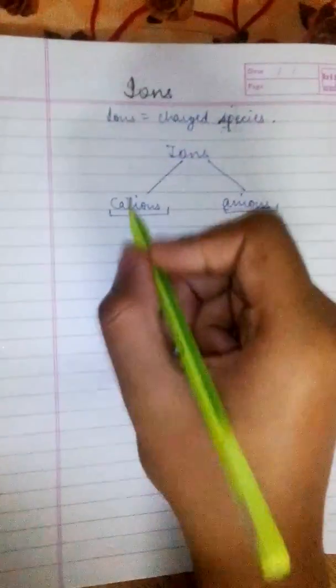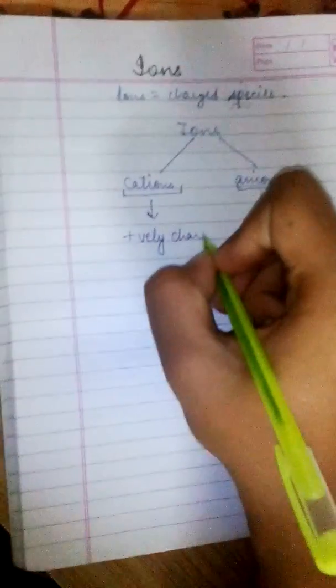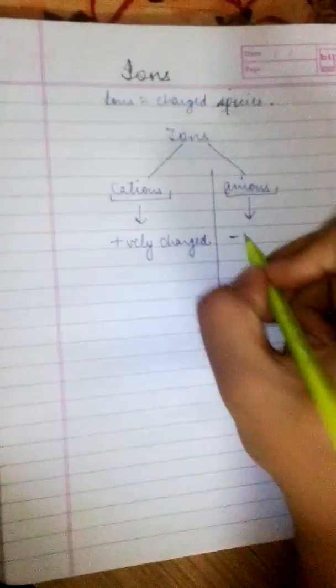First let us talk about cation. Cations, they are positively charged. Anions, they are negatively charged.